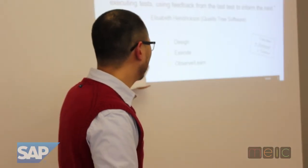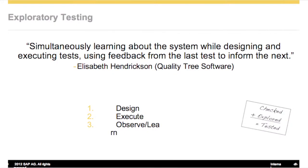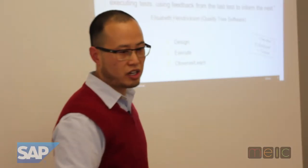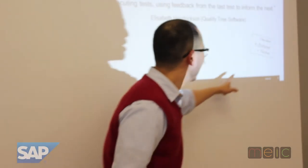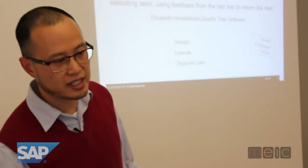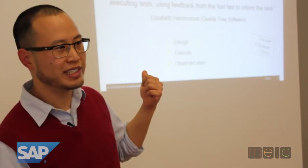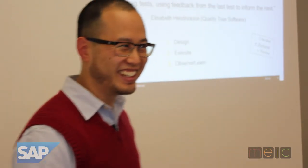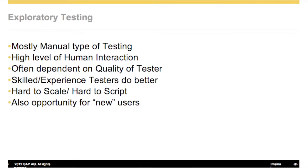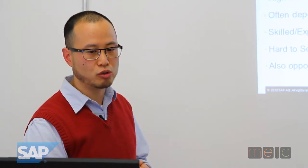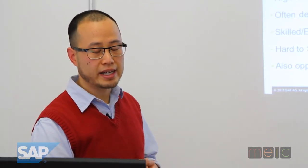Let's talk about the design-execution-observation cycle that Elizabeth is talking about. She has this clip art that says: checked plus explored equals tested. That's what she came up with. Exploratory testing is mostly a manual type of testing — you could imagine some cases where you'd use some level of automated testing, but the idea is it's mostly manual with a high level of human interaction.